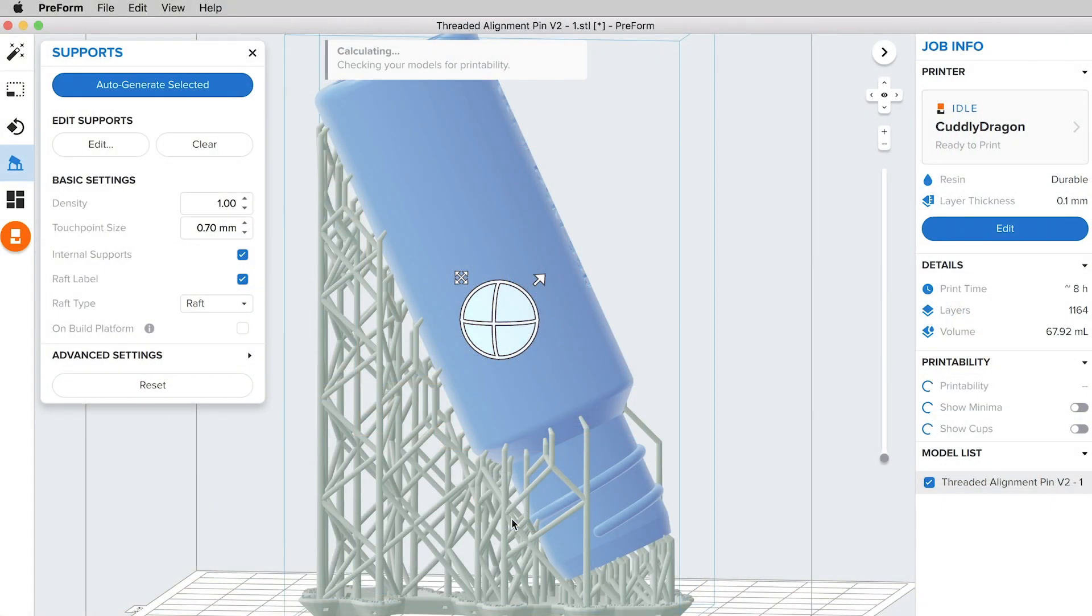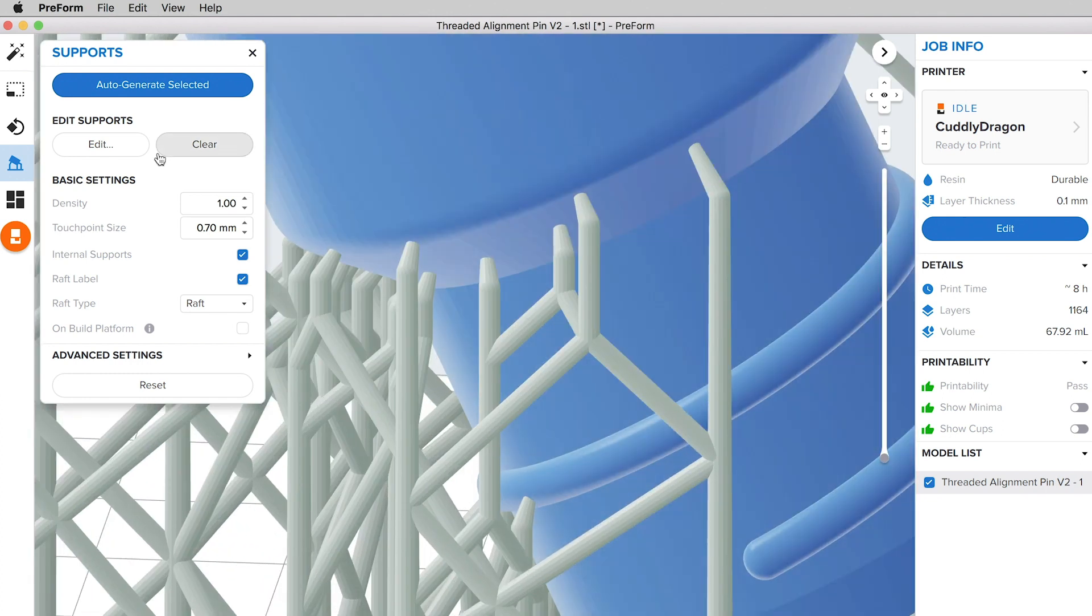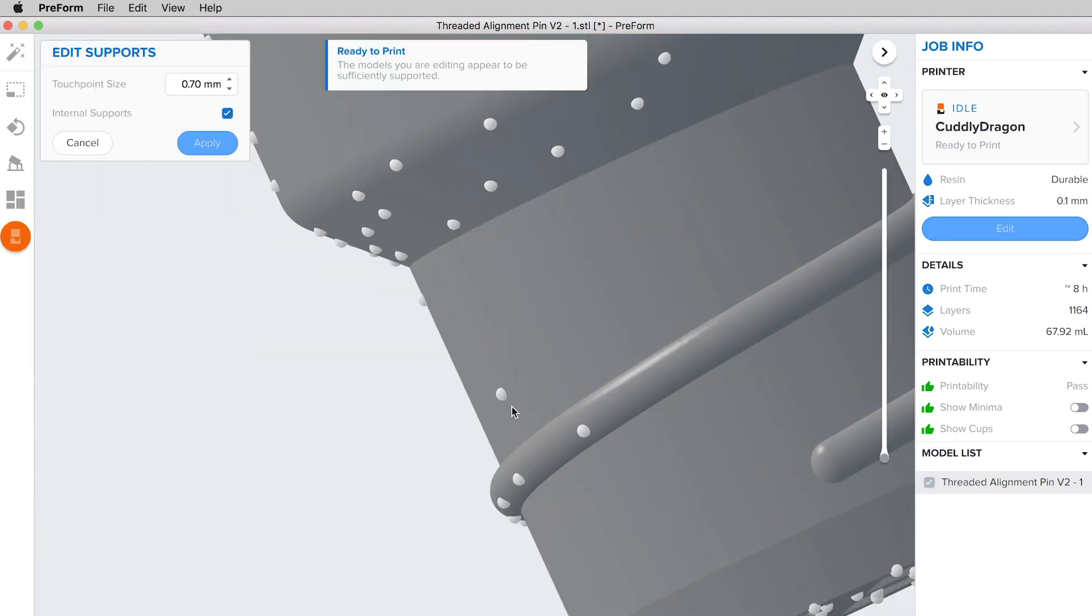When preparing your models for printing, it's important to minimize support structures on any of these threaded surfaces. This will ensure that your geometry is accurate and that parts will come together easily without extra finishing work.